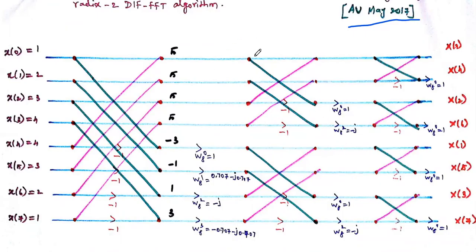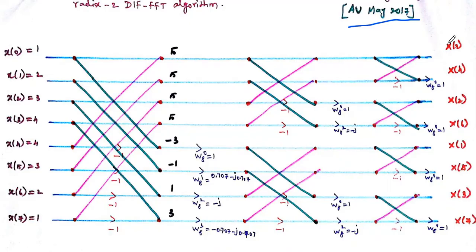In the previous video we discussed how to draw the eight-point DIF FFT butterfly diagram. If you want to learn that, the link is in the description box. In the DIF algorithm, the input is in natural order and the output is in bit-reversed order. So x(0), x(1), ... x(7) are inputs, and the outputs X(0), X(4), X(2), X(6)... are in bit-reversed order.